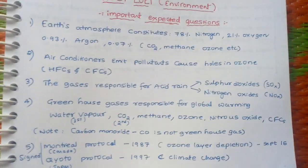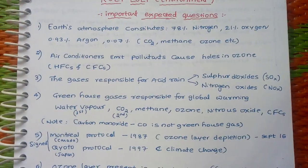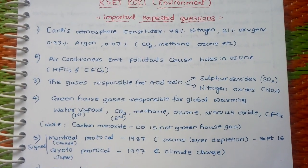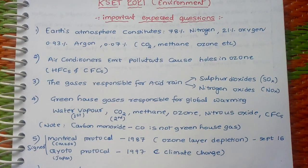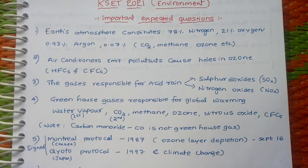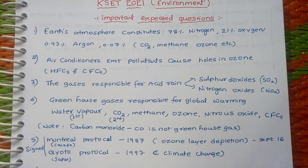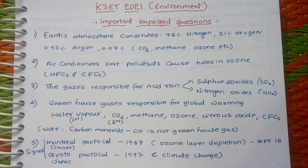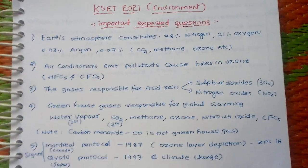First, the Earth's atmosphere consists of 78% Nitrogen, 21% Oxygen, 0.93% Argon, and 0.07% other minor gases like Carbon Dioxide, Methane, Ozone, etc.